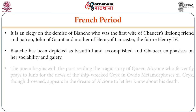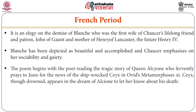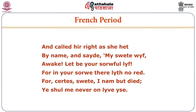The poem begins with the poet reading the tragic story of Queen Alcyone, who fervently prays to Juno for news of her shipwrecked husband Ceyx in Ovid's Metamorphoses. A few lines from the poem: 'And called here, right as she hath by name, and said: my sweet wife Vivek, let be your sorrowful life, for in your sorrow there lieth no remedy, for certain he is dead, I know it well, ye shall me never on live find.' These lines are preserved in the original Middle English format.